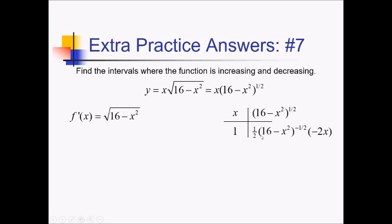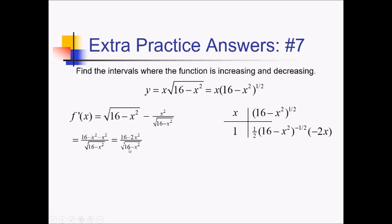Let me multiply all this out using the product rule. I've got 1 times the radical form — radical 16 minus x squared — because I'm about to find critical values and that'll be easier in radical form. Going the other way, we have x times negative 2x in the numerator, which is negative 2x squared, with a 2 and radical 16 minus x squared in the denominator. The 2s cancel, leaving just negative x squared over radical 16 minus x squared. To set this equal to 0 it'll be easier as a single fraction, so merging with a common denominator of radical 16 minus x squared, I get 16 minus x squared in the numerator, which combines to give 16 minus 2x squared over radical 16 minus x squared.